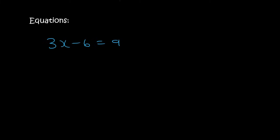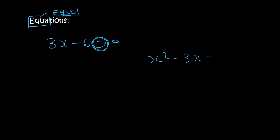Most of you know what equations are, but sometimes kids get a bit confused. If you look carefully at the word 'equations', you can almost see the word 'equal' — there's an equal sign in equations. Whereas if I just gave you something and said factorize, that's not an equation. That's just a factorizing question. As soon as I add an equal sign, then all of a sudden it's an equation.